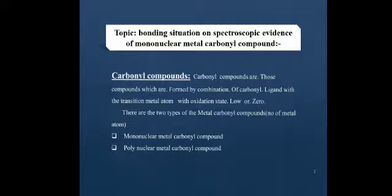There are two types of metal carbonyl compounds, based on the number of central metal atoms. The two types are: mononuclear metal carbonyl compounds and polynuclear metal carbonyl compounds.